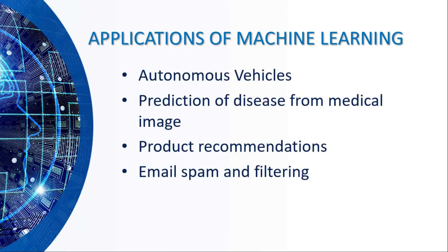Let's look at applications of machine learning. The first application is autonomous vehicles. Tesla produces self-driving vehicles, which use the principles of machine learning. The machine first learns driving, and through computer vision and other image processing techniques and machine learning algorithms, it can drive by itself. Different companies have been producing self-driving cars — BMW, Google, and Tesla — and these require extensive use of machine learning concepts.